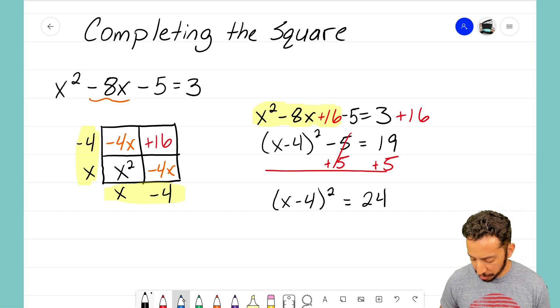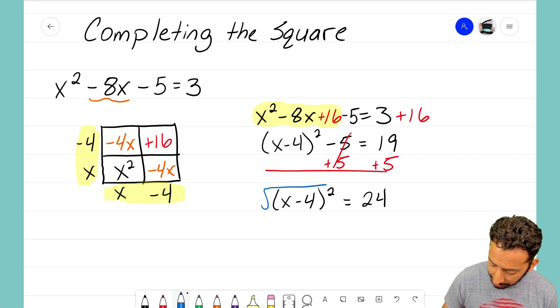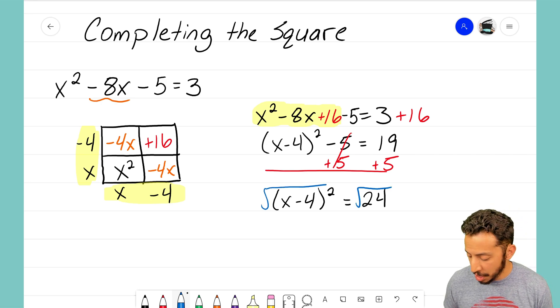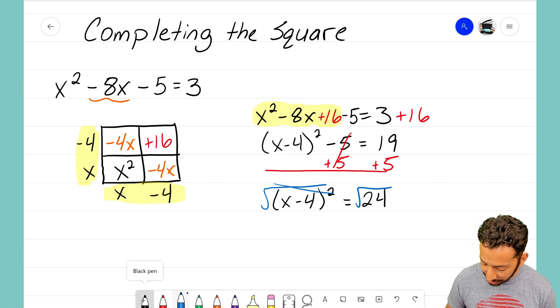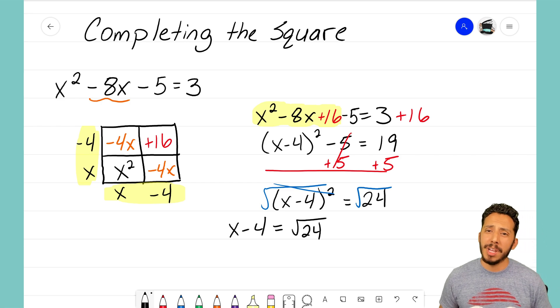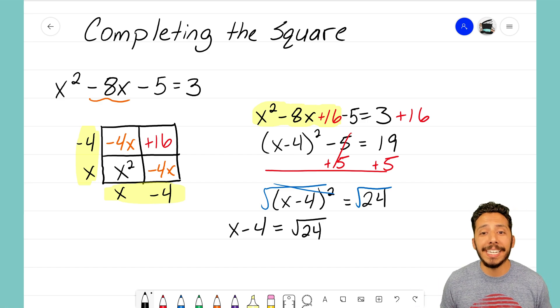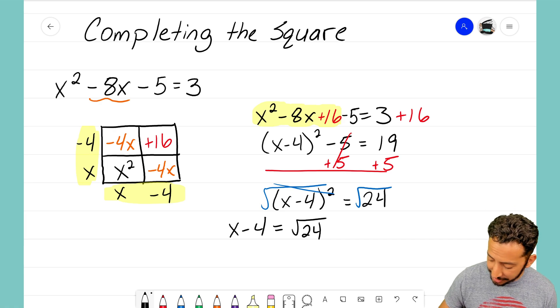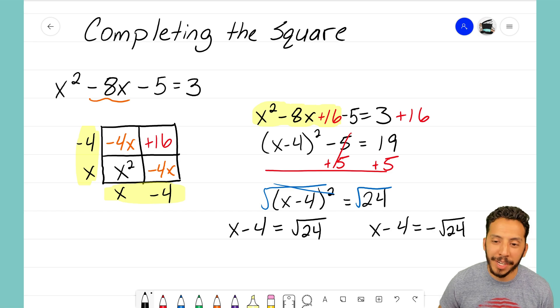Now I want to get x by itself so I'm going to need to take the square root of both sides. So I'll take the square root of the left and the square root of the right. Those squares and the square roots on the left cancel. So we're just left with x minus 4 equals the square root of 24. But remember that's the positive answer. I'll also end up with a negative answer. And the negative answer will be the same thing, x minus 4 equals negative root 24.